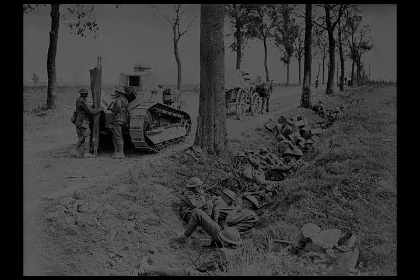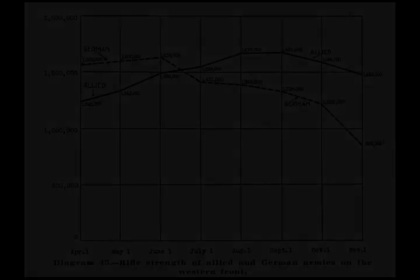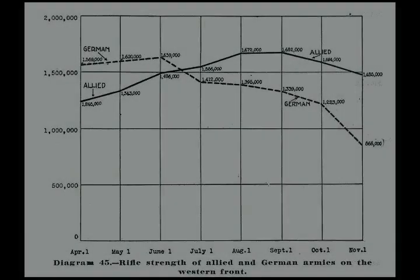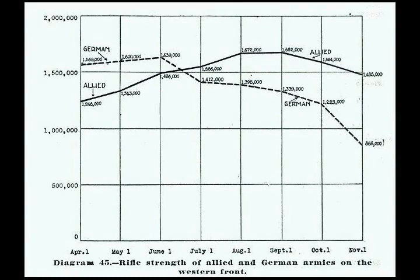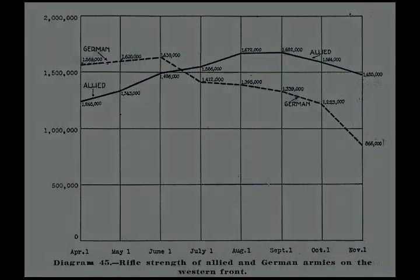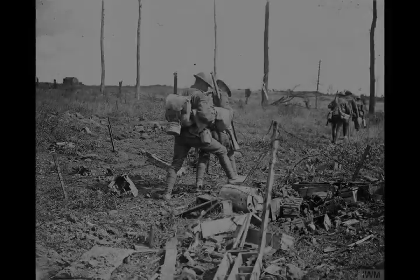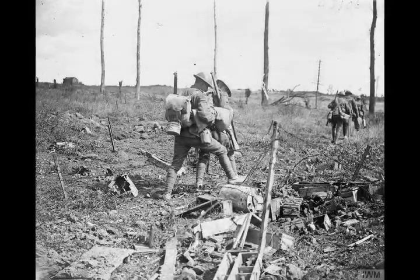The Picardy terrain provided a good surface for tanks, unlike in Flanders, and the defences of the German Second Army under General Georg von der Marwitz were relatively weak, having been subjected to continual raiding by the Australians in a process termed peaceful penetration.